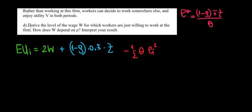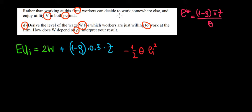Let's work on part D now. Instead of working at this firm, the workers can work somewhere else and they would get utility V in both periods. We need to derive the wage for which workers are willing to work at this company, and how that depends on rho — the probability that the outsider gets the job.